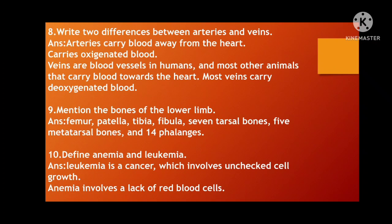Next: Write two differences between arteries and veins. Arteries carry blood away from the heart and mainly carry oxygenated blood. Veins, opposite to that, are blood vessels that carry blood towards the heart in humans and most other animals, and they mainly carry deoxygenated blood.